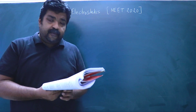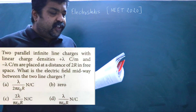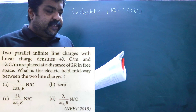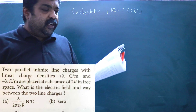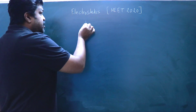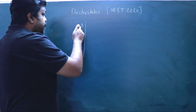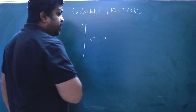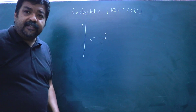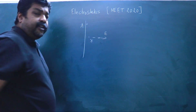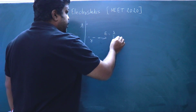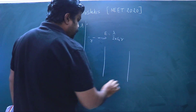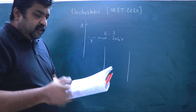Another question from NEET 2019: two parallel infinite line charges with linear charge densities +λ coulomb per meter and −λ coulomb per meter are placed at a distance 2R in free space. What is the electric field midway between the two line charges? For a line charge, if λ is positive, the electric field is directed away; if λ is negative, the field is directed towards the line charge.